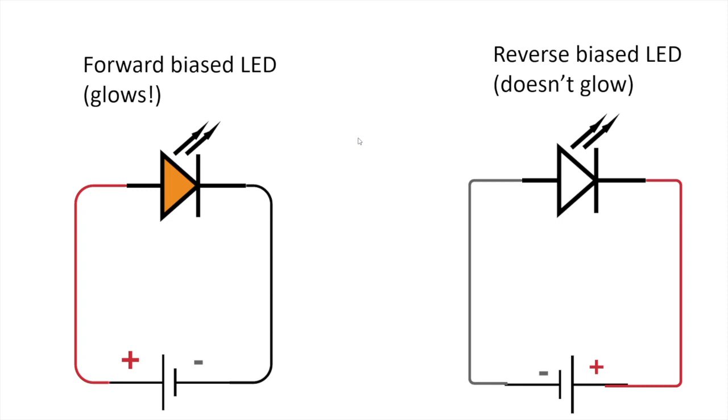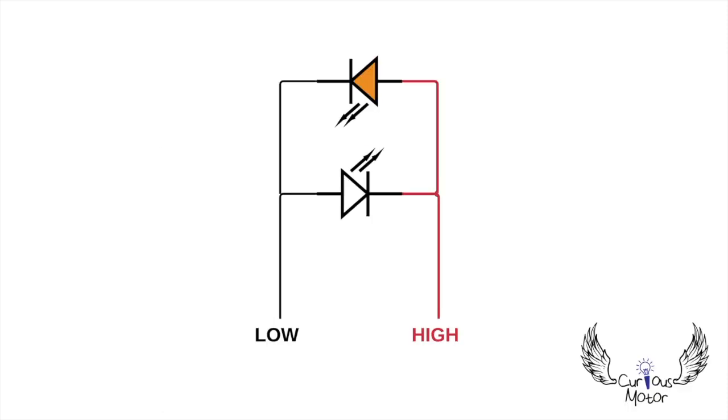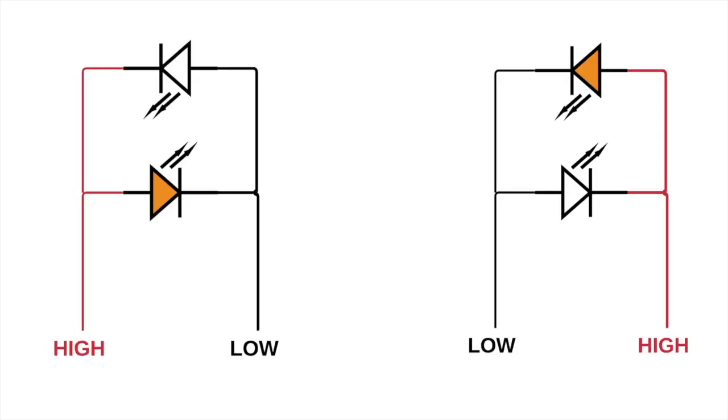This idea exploits the fact that LEDs, like all other diodes, conduct only in one direction. We can connect two LEDs with oppositely oriented polarities to two pins on the Arduino. Depending on which LED we want to light up, we can set the pins high or low accordingly.